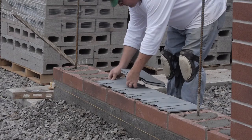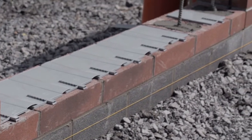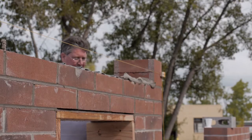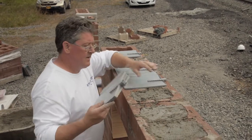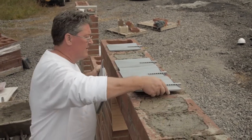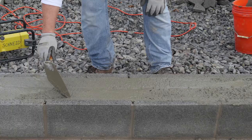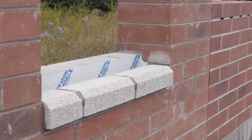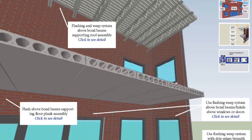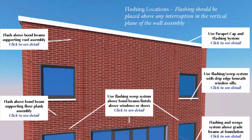Where would an interruption in the path occur? Commonly there will be interruptions at bond beams or lintels that are in the wall for structural reasons. These horizontal reinforced structural elements are located at the base of the wall, at wall openings such as windows or doors, and at locations where the wall supports floors or roof structures. CPG has created a flashing map that details these locations.